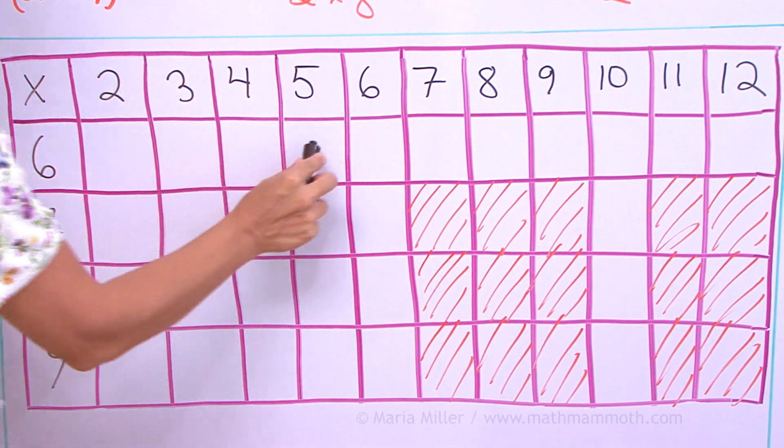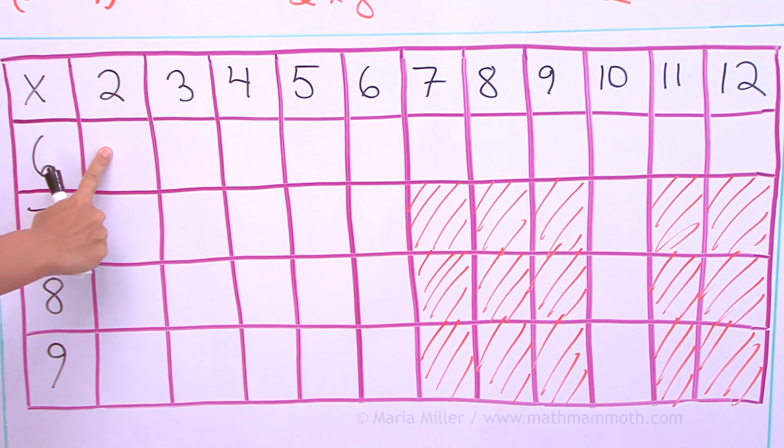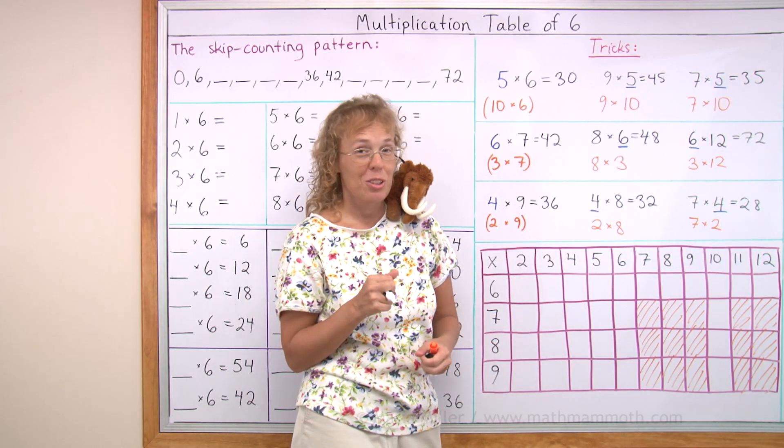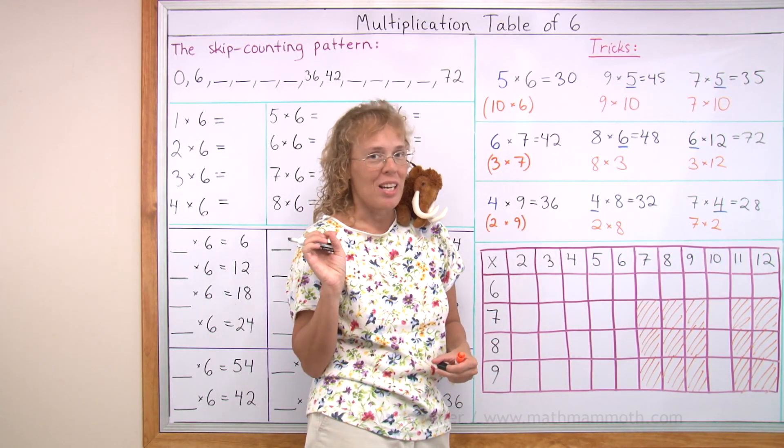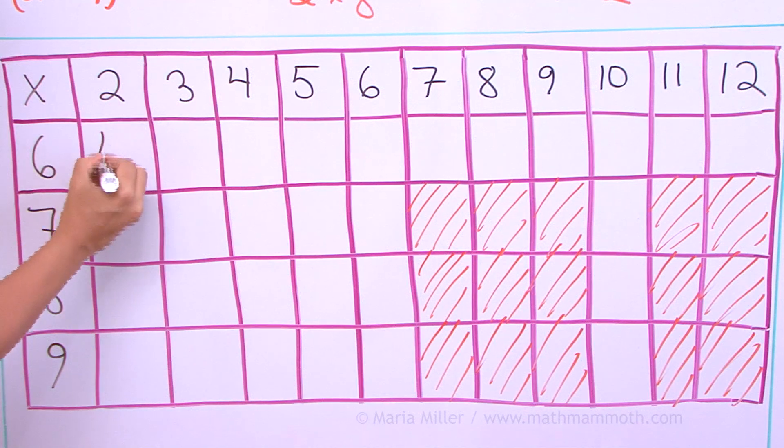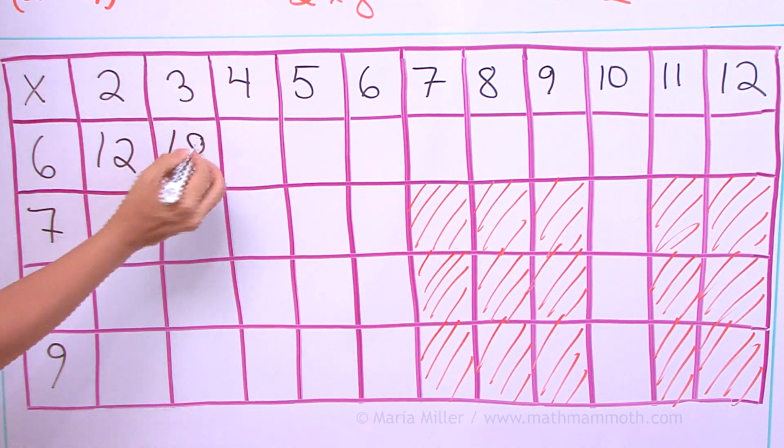And here would go the skip counting pattern by 6s. 2 times 6 goes here, 3 times 6 and so on. So let's fill in that first. You try to fill it in your mind before I write it. So you get to practice. 2 times 6, 12. And then 3 times 6, 18.